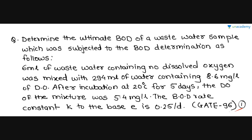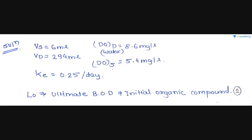Let's analyze the question. Given: 6 ml of sewage sample mixed with 294 ml of water having 8.6 mg/L of DO. After incubation at 20°C for 5 days, the DO of the mixture is 5.4 mg/L. The BOD rate constant K to base E is also given. So the given values are: volume of sample = 6 ml, volume of distilled water = 294 ml, DO of water = 8.6 mg/L, DO₅ (final DO) = 5.4 mg/L, and K (base E) = 0.25 per day.